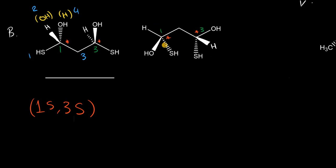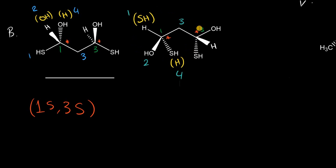Now for the second compound: the thiol group at carbon 1 is projecting towards the back and the hydrogen — the lowest priority group — is on the plane. The first step is to bring the sulfhydryl out front. Once done, we assign priority as usual: sulfur has 16 protons so it takes first priority, oxygen takes second, the CH2 group takes third. Drawing the arrow from 1 to 2 to 3 looks counterclockwise, but really at carbon 1 we have R.